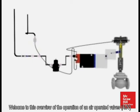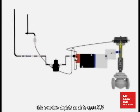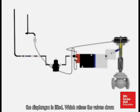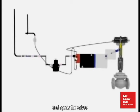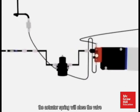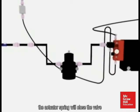Welcome to this overview of the operation of an air operated valve (AOV). This overview depicts an air-to-open AOV, meaning that when air pressure is supplied to the AOV, the diaphragm is lifted, which raises the valve stem and opens the valve. Conversely, if air is removed from the AOV, the actuator spring will close the valve.